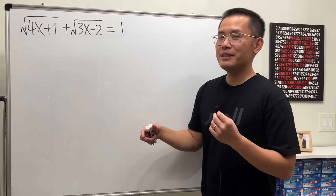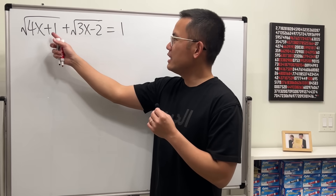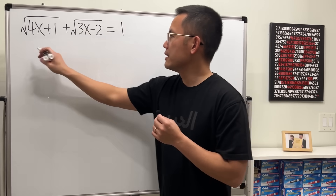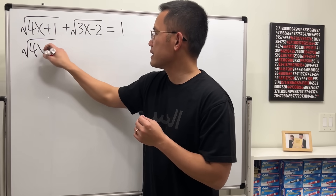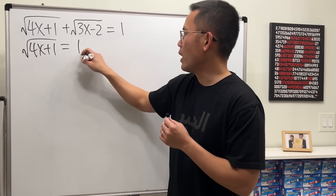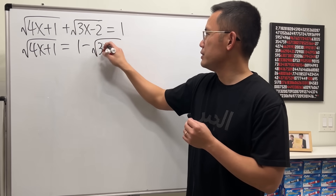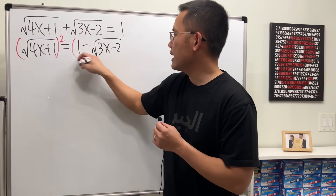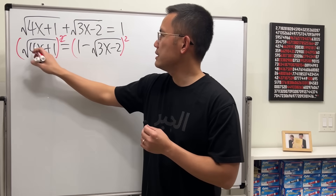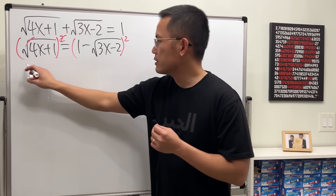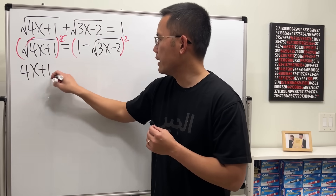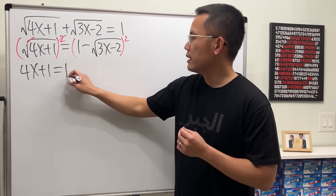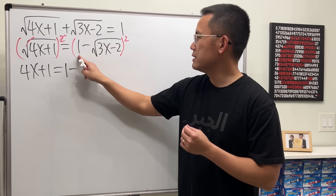Let's go ahead and do the usual procedure first. It will be easier if we isolate one of the square roots. Let me move this to the other side, so we have square root of 4x plus 1 equals 1 minus square root of 3x minus 2. Now once we square both sides, this and that cancel right away, so that's 4x plus 1 equals — expand this square — the 1, and then minus 2 times this and that.